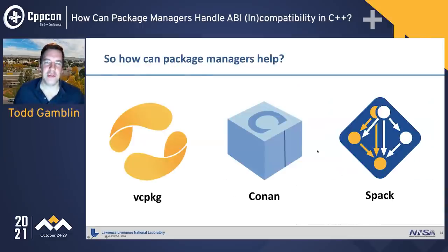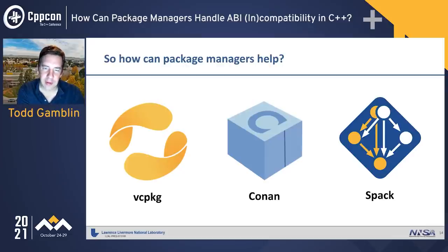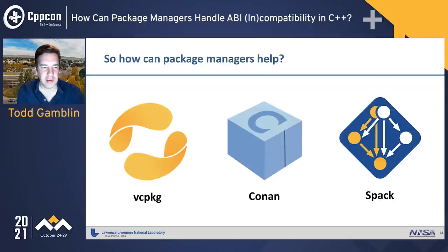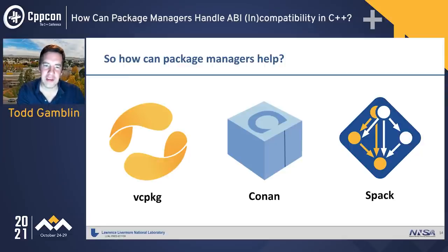So how can package managers help? I'm going to talk about VCpkg and Conan. I'm actually the developer of Spack, which is another package manager used pretty widely in HPC but not so widely within the C++ community. I wanted to compare how Spack manages ABI compatibility with how VCpkg and Conan do it and look for common themes, because C++ is actually pretty similar to HPC — we care about lots of different versions and configuration options, we build from source frequently, and we have lots of different language dependencies.